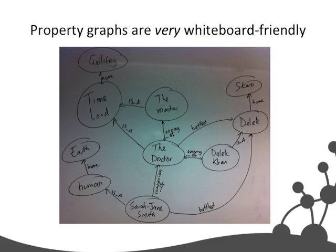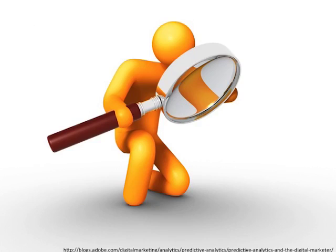In a graph database, what you draw is what you store. You don't need to do all the voodoo of denormalizing through 17 tables — you draw it, you store it, you query it. The domain model is highly fidelity to your data. Which brings us now to predictive analytics.